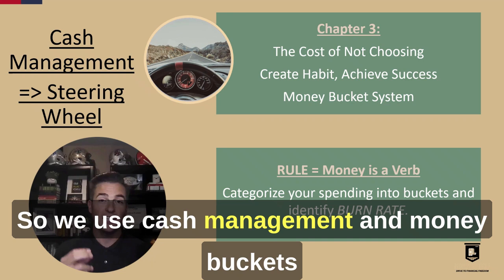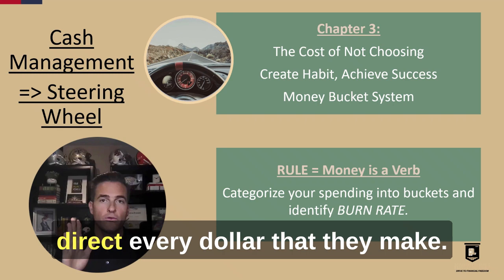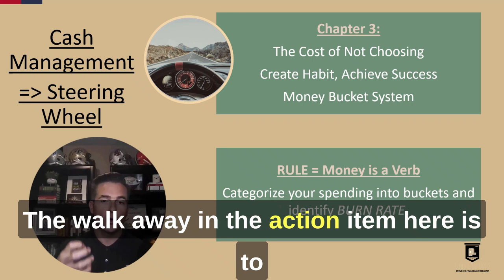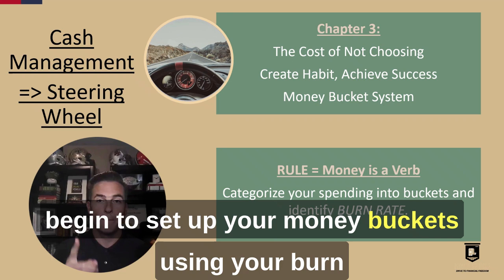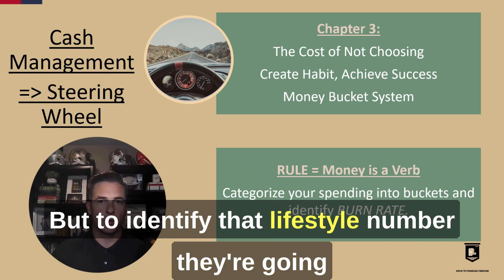With five choices, students will get to direct every dollar that they make. Chapter 2: employ your money. The walkaway and action item here is to begin to set up your money buckets using your burn rate — your past and present choices — and to identify that lifestyle number they're going to need on a month-to-month basis.